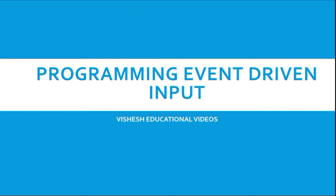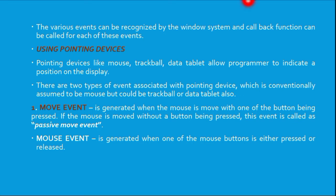Various events can be recognized by the window system, and callback functions can be used for each of these events. An event is nothing but its occurrence in time — something is going to happen. For example, if you click a button on the keyboard, that is a keyboard event. If you press the mouse button, that is a mouse event. Every event has some action associated with it.